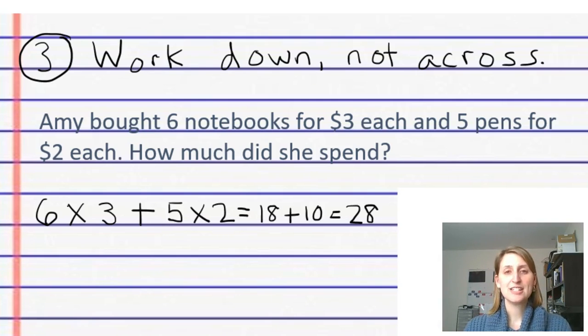Third, teach your kids to work down the paper, not across the paper. So for example for a child who had this word problem that Amy bought six notebooks for three dollars each and five pens for two dollars each, how much did she spend? The child could write it out this way by writing 6 times 3 plus 5 times 2, that equals 18 plus 10, which equals 28.